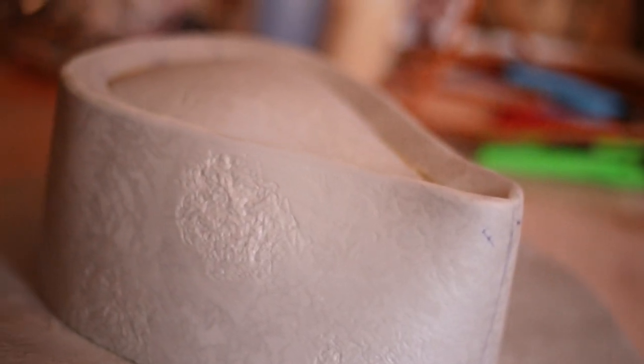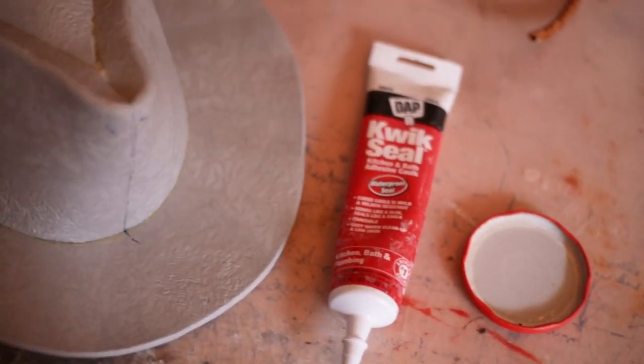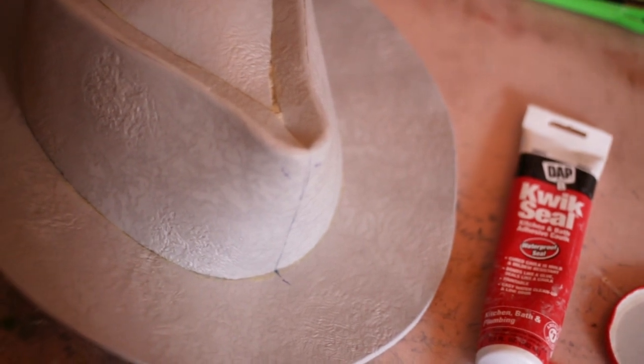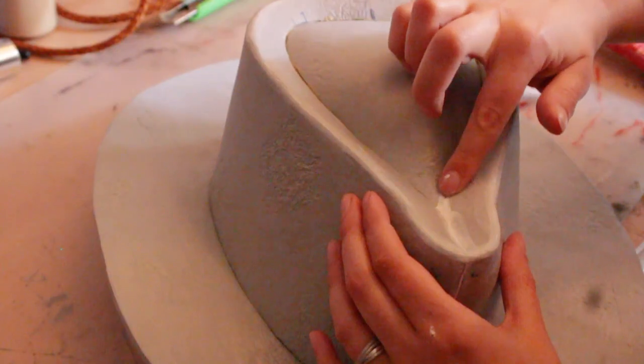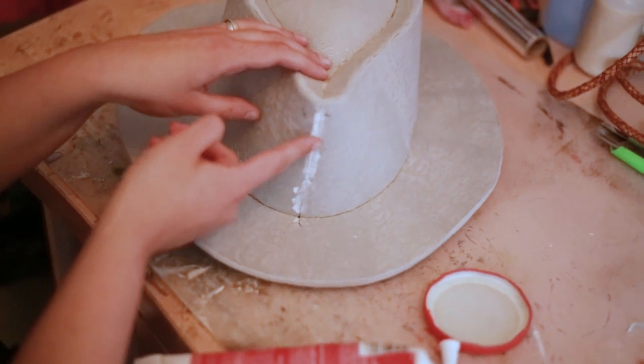So that already looks quite a lot like Arthur's hat, right? To make the seams of the different pieces even less visible I covered them with some quick seal. It's super easy to apply and you're able to smooth it out with wet fingertips.